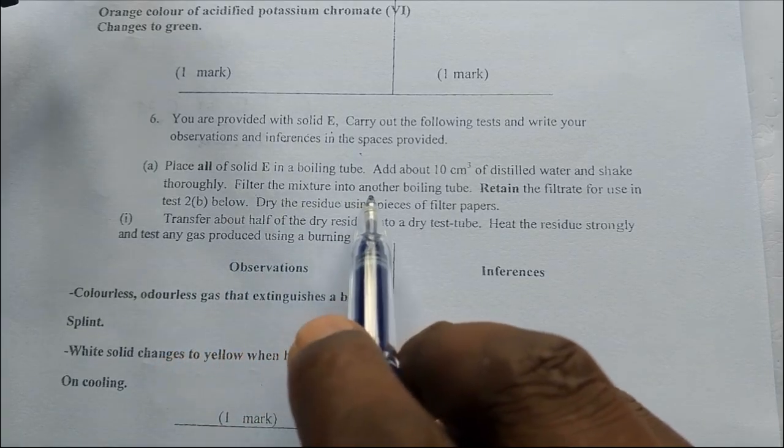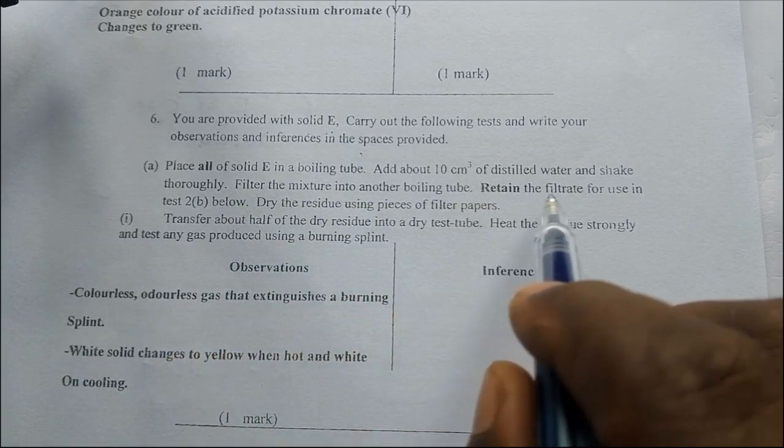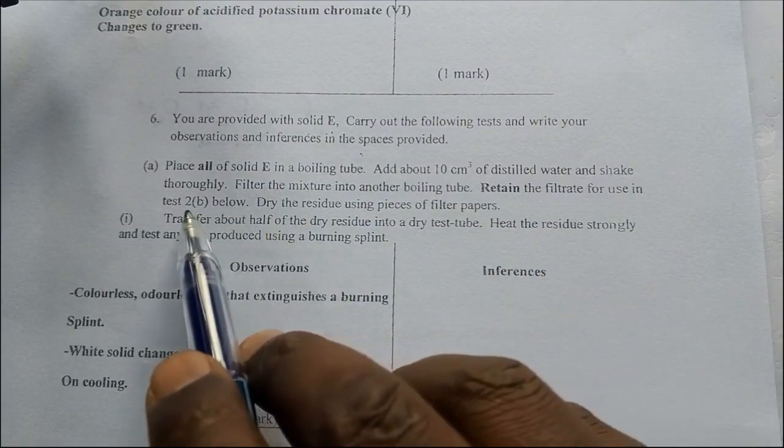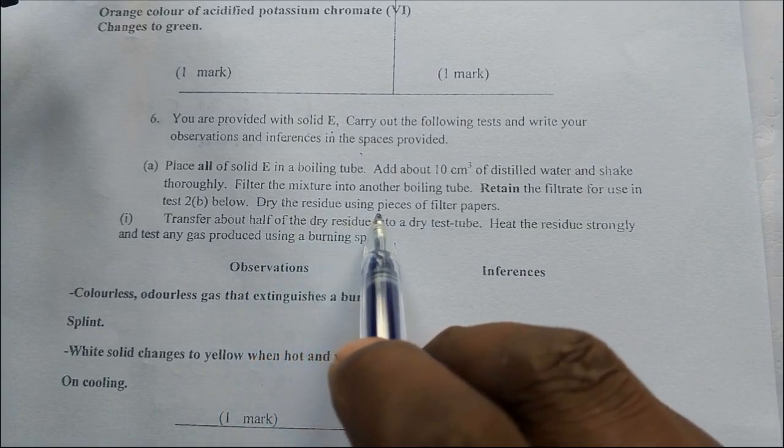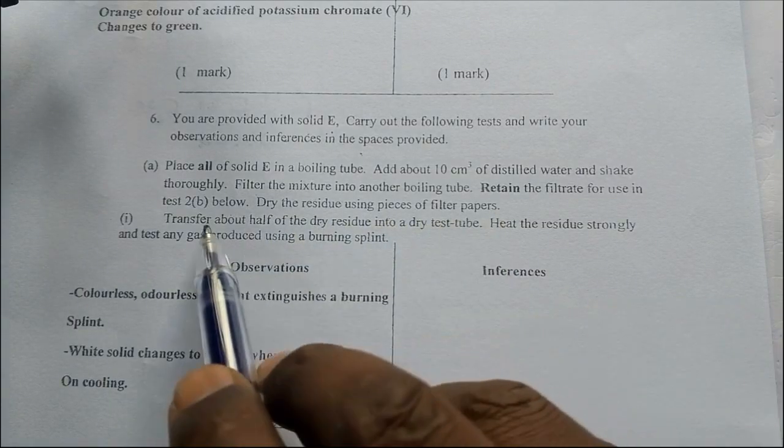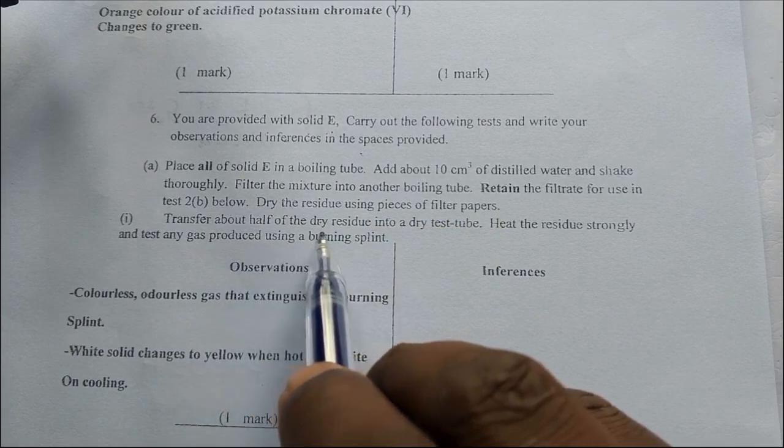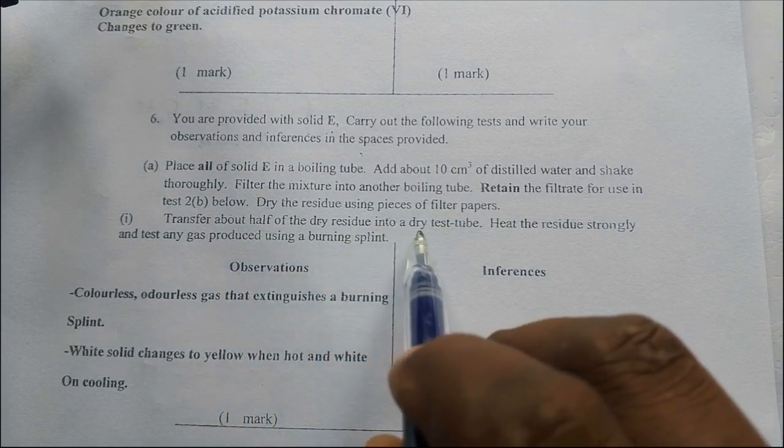Filter the mixture into another boiling tube. Retain the filtrate for use in test 2 below. Dry the residue using pieces of filter papers. Transfer about half of the dry residue into a dry test tube.